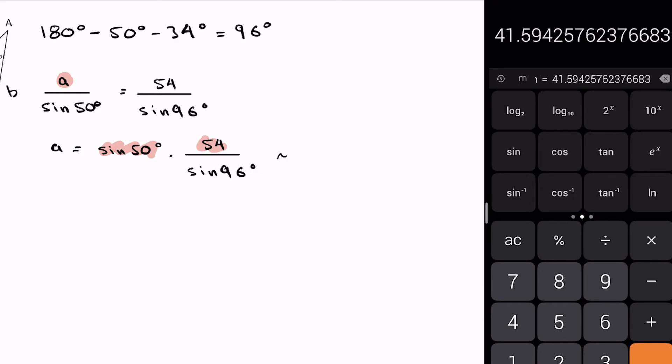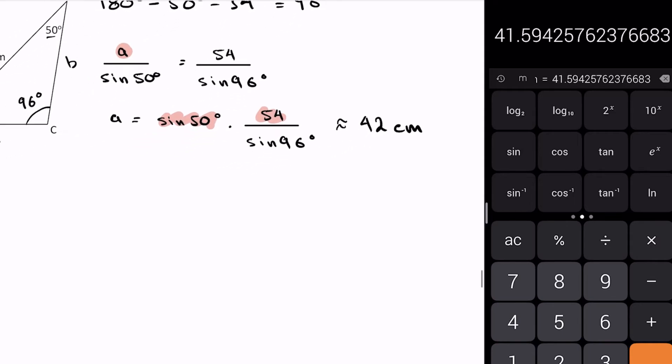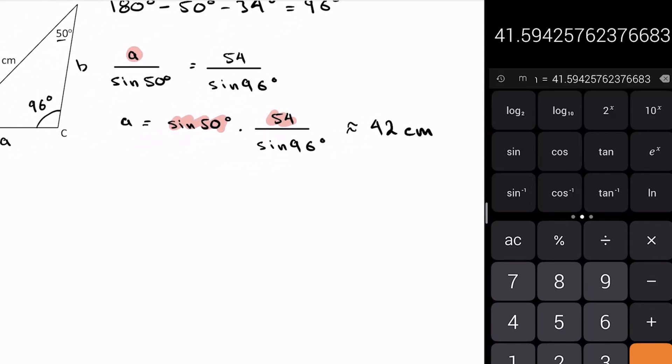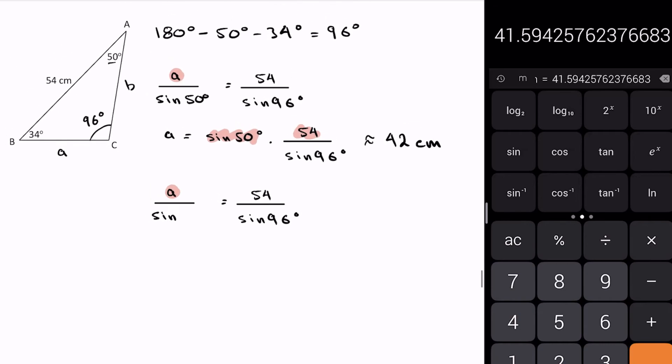Let's just say roughly 42 centimeters. Now for side b, I'm going to do the same thing. I'm going to have b and the opposite angle which is 34, so I'm going to have 34 degrees over here, and instead of side a I have side b.